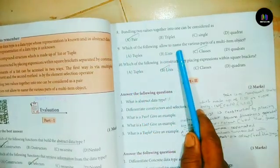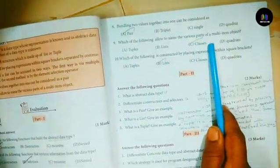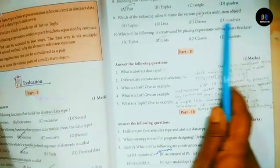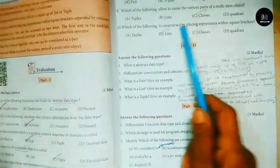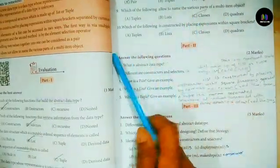Question number 9: Which of the following allows us to name the various parts of multi-item object? Answer C: Classes.